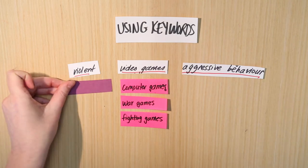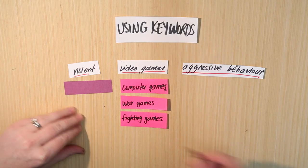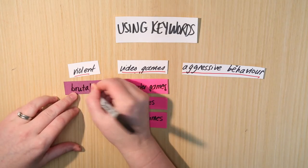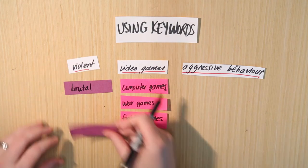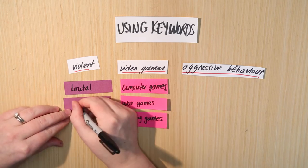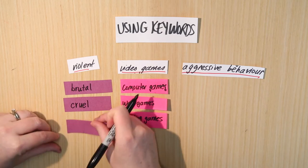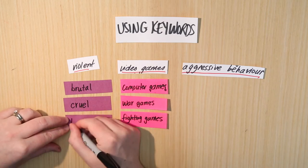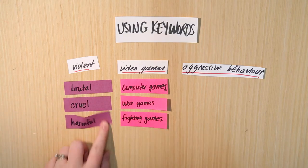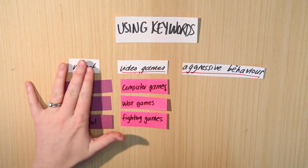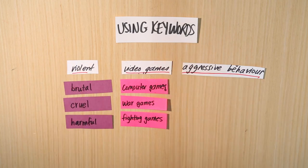Let's do the same thing for the other concepts. For 'violent,' what's another word we could use? How about 'brutal'? A video game could be violent, but it could also be brutal. Maybe another word an author would have used is 'cruel,' or even 'harmful.' These are different synonyms, different options we could use besides the word 'violent,' which is our main keyword. For 'video games,' which is another main keyword, those are some other options we've already listed.